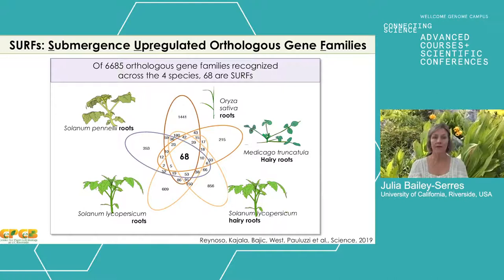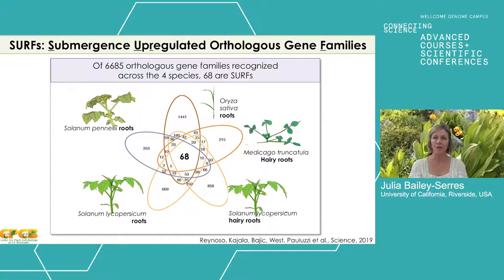What we found was that across these species, there's a core group of genes falling into orthologous gene families that are upregulated by short-term submergence stress. We called these genes SERPs, identified from 6,685 orthologous gene families recognized across the four species. In addition to this common group, there were many genes upregulated in rice — over 1,000 — beyond members of these families. Rice had the most pronounced number of upregulated genes, perhaps unsurprising given it is submergence-adapted, while Solanum pennellii had the least.